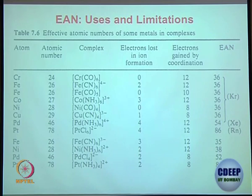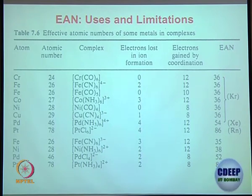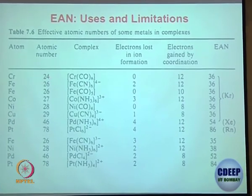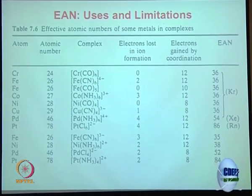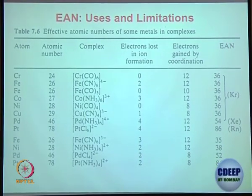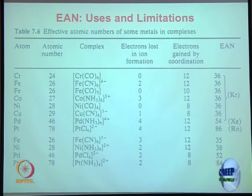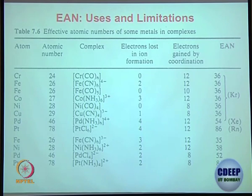In another way, using the effective atomic number approach: instead of valence electrons, use the total electrons in the atom. For chromium, which has 24 electrons, plus 6 carbonyls donating 12 electrons: 24 + 12 = 36, the nearest noble gas configuration. That is nothing but the 18 electron rule — looking at s²p⁶d¹⁰, which is 2 + 6 + 10 = 18. That is why we call it the 18 electron rule, also known as the effective atomic number rule.